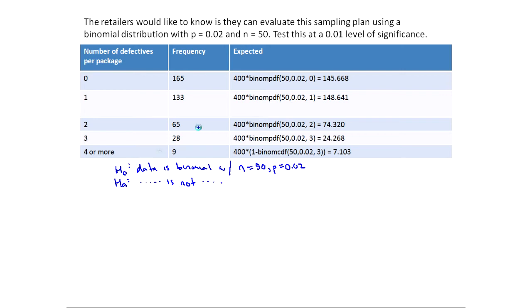I assumed H naught is true to find my expected frequency. So I said, if this is in fact true, how many out of the 400 packages should contain zero defects? Well, the percentage comes from the probability. And if it's binomial, that probability is a binomial PDF because we're talking about equals zero. This is probably X equals zero, so that would be binomial 50, 0.02 for n and p, and then the value you're interested in. Then I multiplied by 400 because they actually sampled 400 packages, and I expect 145.668.